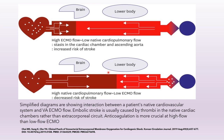This simplified diagram from a Korean circulation journal shows the interaction between the native heart and ECMO flow. In the first scenario — low cardiac flow and high ECMO flow — there will be stasis in the cardiac chambers and ascending aorta, increasing the risk of stroke. In the second scenario — high native cardiac flow and low ECMO flow — the risk of stroke decreases, but differential hypoxemia can occur if the lungs are not functioning well. This means anticoagulation is especially important at high ECMO flow to avoid stasis in the native cardiac chambers.